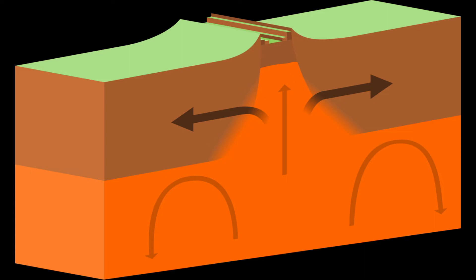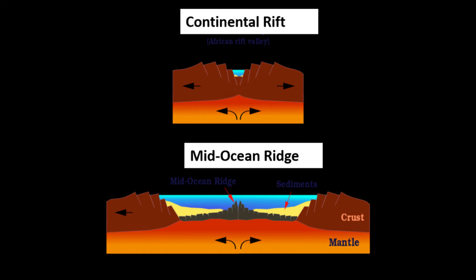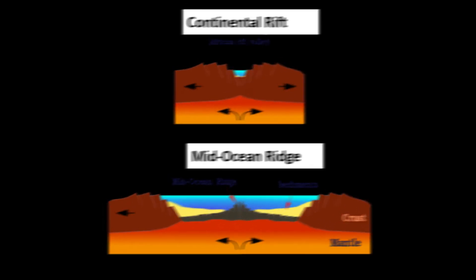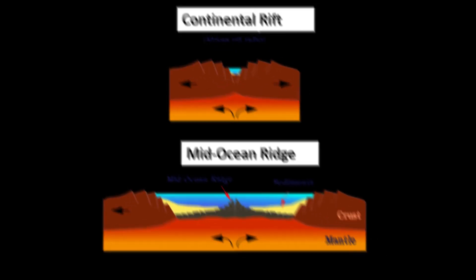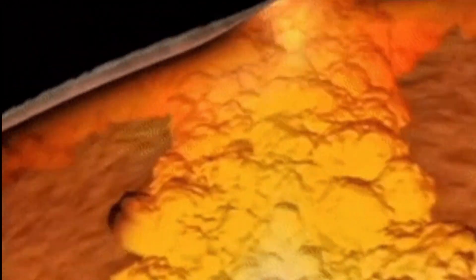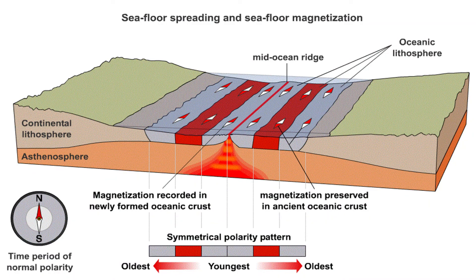Divergent plate boundaries mostly happen under the oceans. As plates pull away from each other, a vertical space that may extend deep down into the lowest layer of the crust is created — it is a rift valley. The force of separation creates a tension zone, and a shallow earthquake may happen with this plate movement. Plate divergence is believed to be a slow, continuous process. As the plates move away, the gap between them increases.